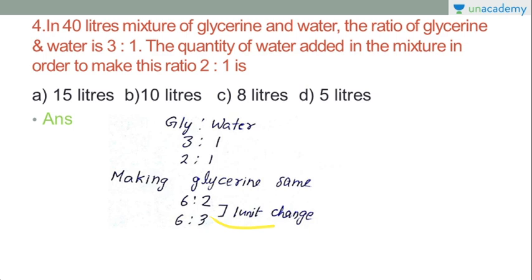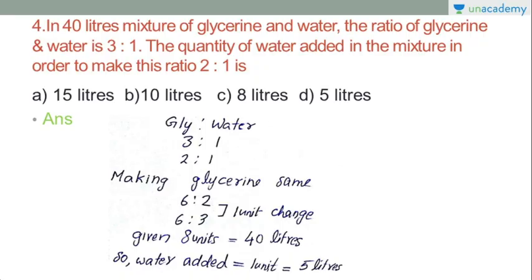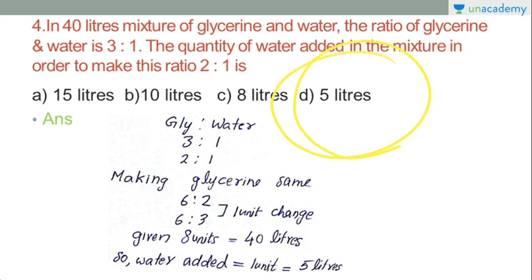Glycerin is 3 units and remains the same. We make the glycerin equal by cross-multiplying. If there are 8 units total and we split, the idea is that the ratio equals 5 to 1. This gives us the quantity of water to add.